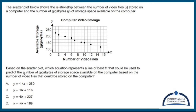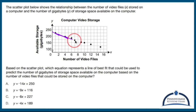Based on the scatter plot, which equation represents a line of best fit that could be used to predict the number of gigabytes of storage space available on the computer based on the number of video files stored? I need a line of best fit, so I'm going to do my best to draw a perfectly straight line.